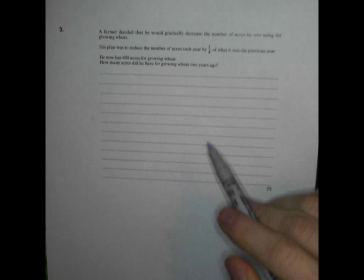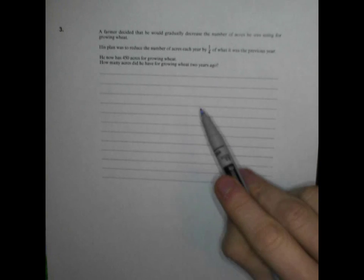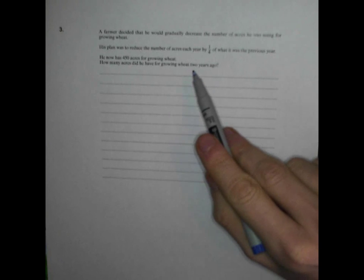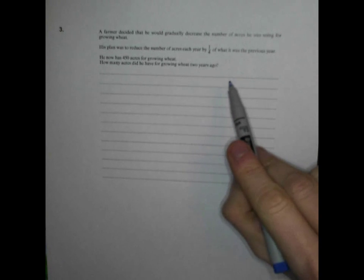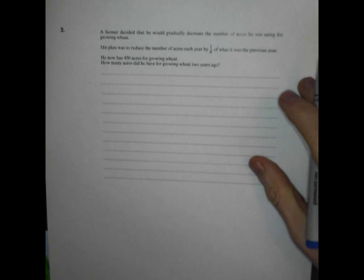Now we have an epic three mark, chatty, tricky fractions question here, but it's definitely doable. So let's have a read. A farmer decided that he would gradually decrease the number of acres he was using for growing wheat. His plan was to reduce the number of acres each year by a quarter of what it was the previous year. He now has 450 acres for growing wheat. How many acres did he have for growing wheat two years ago?